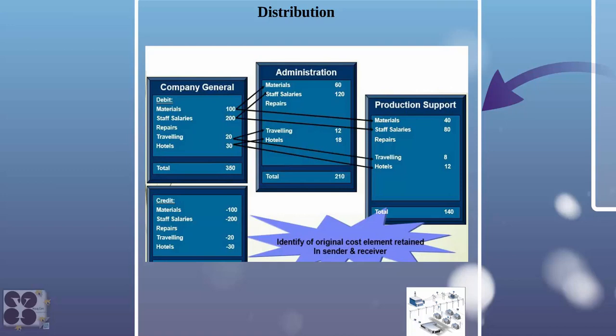In accounting, anything you debit, the similar amount has to be credited. This is our financial posting on the left side. When we use the distribution method, materials 100 is posted to administration and production support — the same cost element is used to debit those cost centers. While crediting, it has been credited across two different cost centers: one is the material cost center, another is production support. So the original cost element is retained. You can see the primary posting happened in FI and this is the secondary posting, whereas the original cost element is still maintained. Same case with travelling and staff. You can see eight different postings along with the original postings — eight more line items in our system.